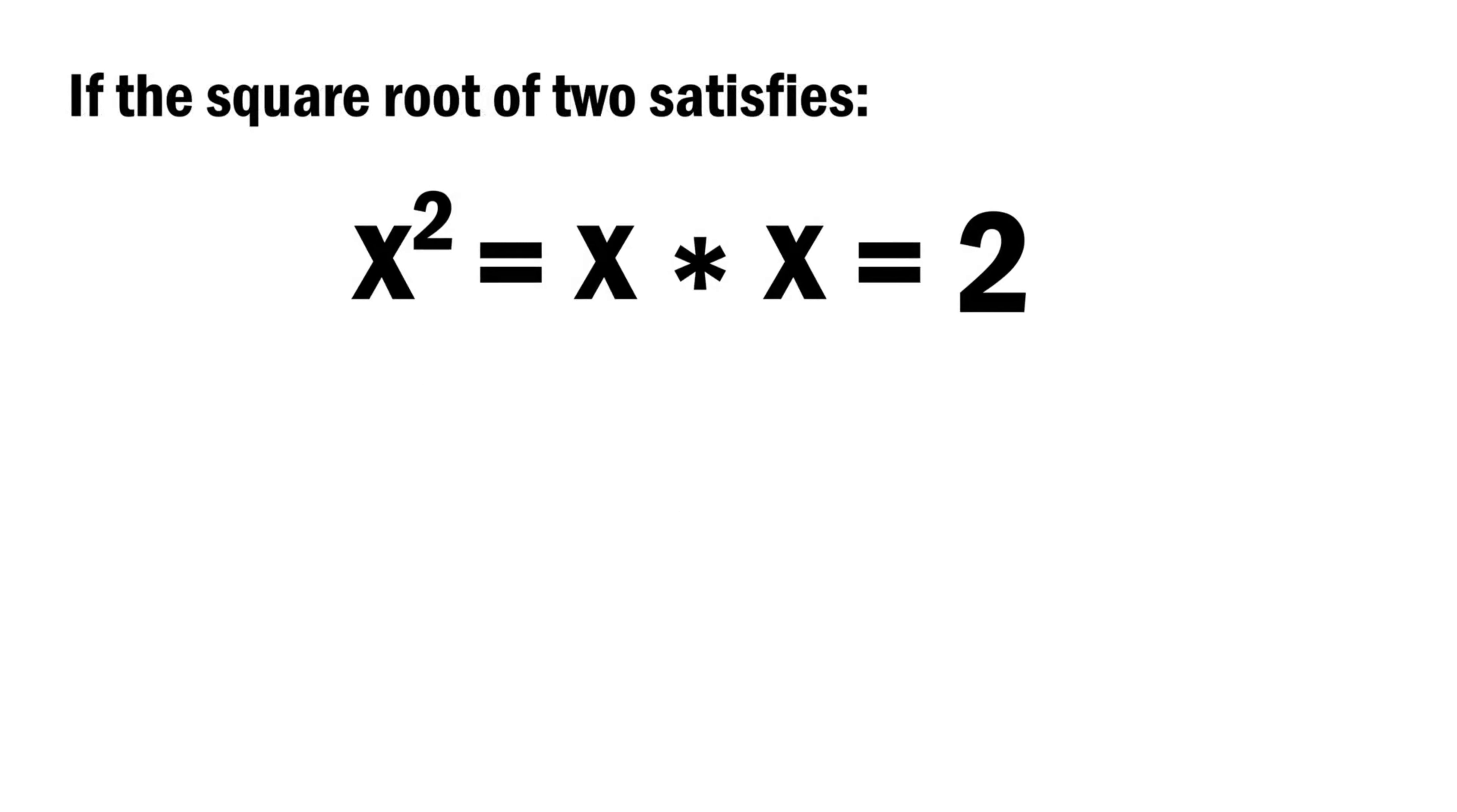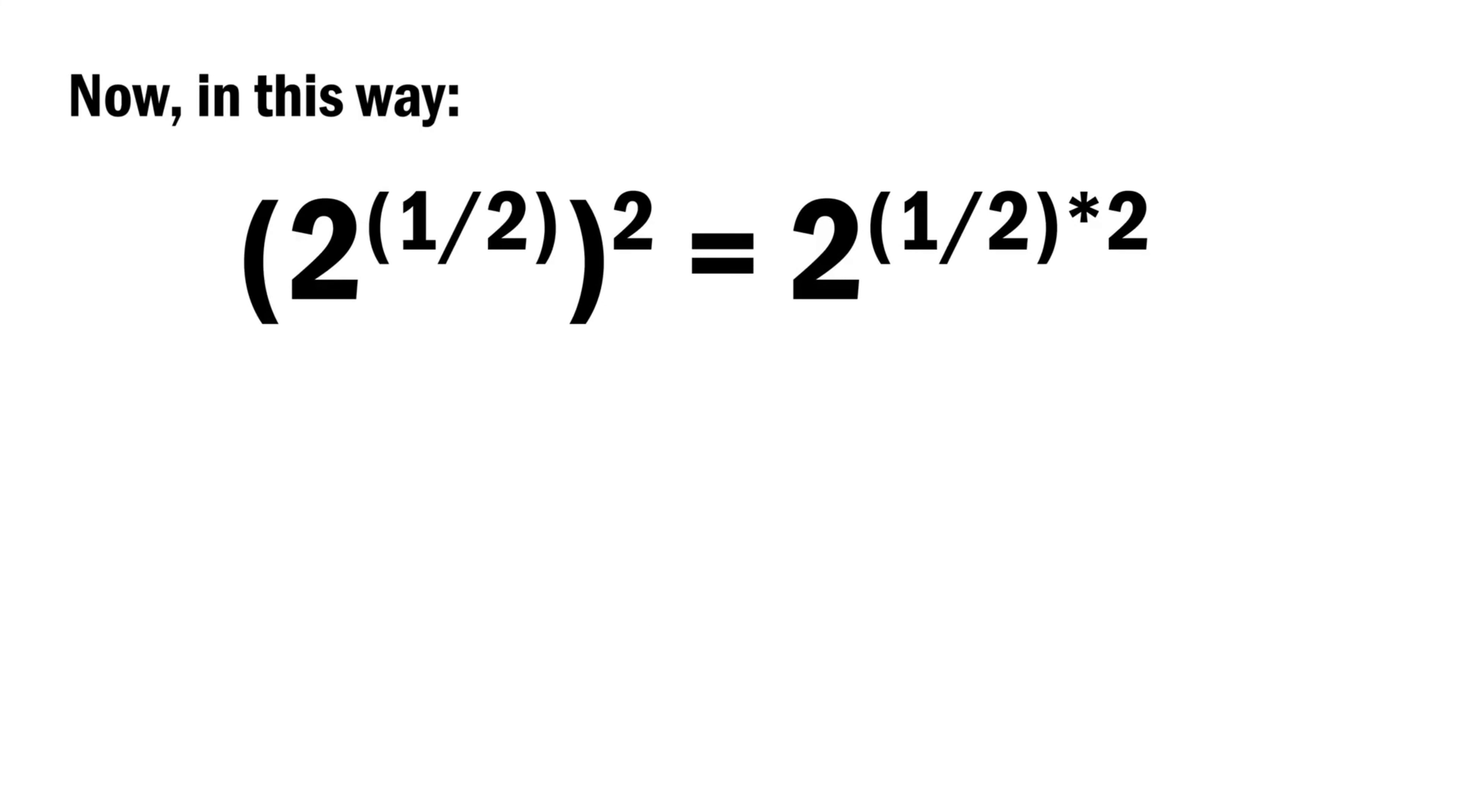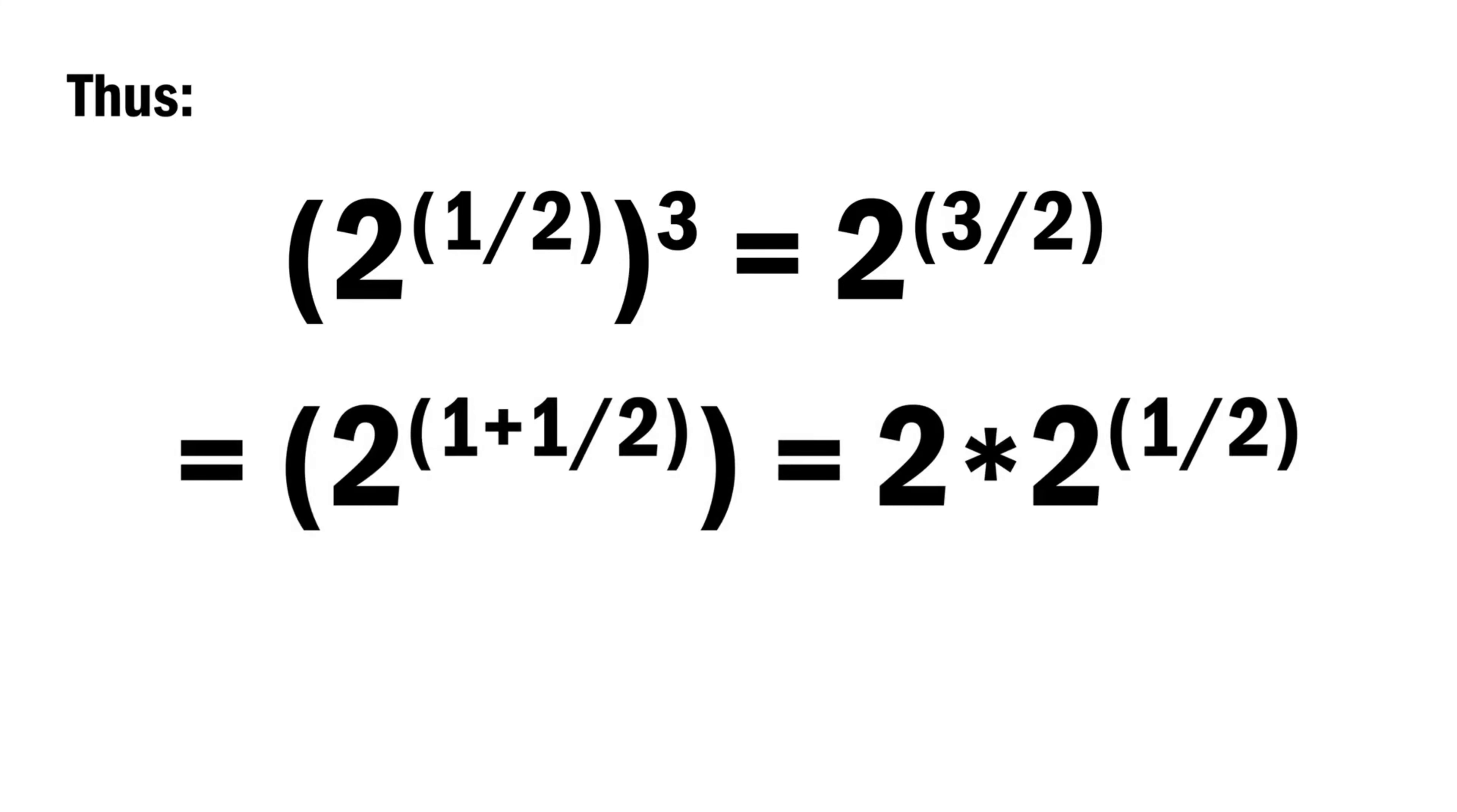If the square root of 2 satisfies x squared equals x times x, which equals 2, then our arithmetic conventions allow us to simply write it as 2 to the 1 half. Now in this way, 2 to the 1 half squared is equal to 2 to the 1 half times 2, which is equal to 2 to 2 over 2, which is also equal to 2 to the 1, which also equals 2. Thus, 2 to the 1 half cubed is equal to 2 to the 3 half, which is equal to 2 to the 1 half times 2, which is equal to 2 times 2 to the 1 half.